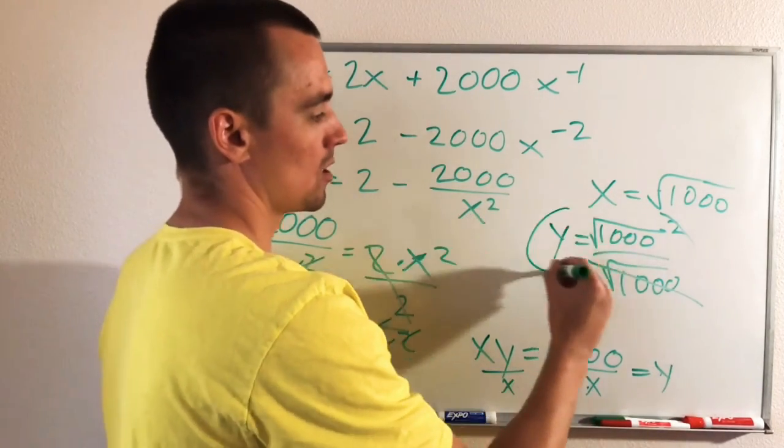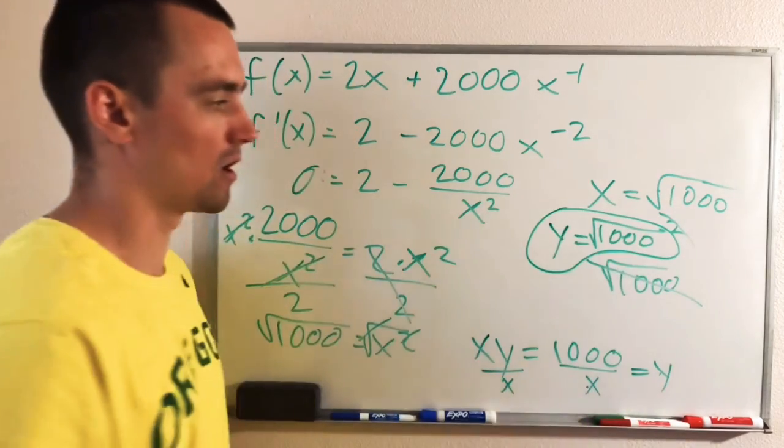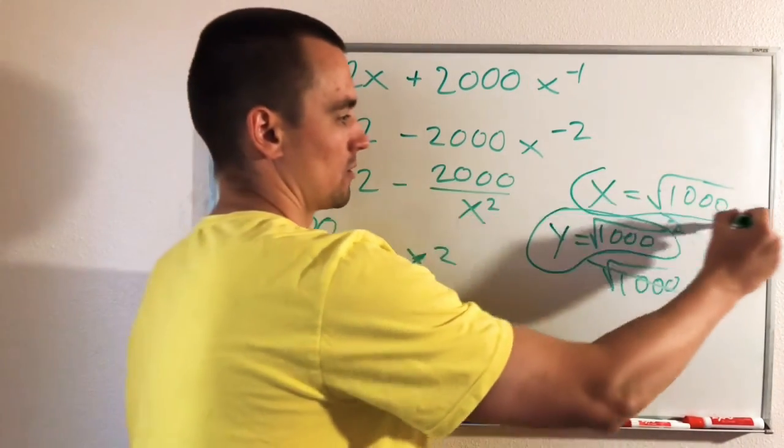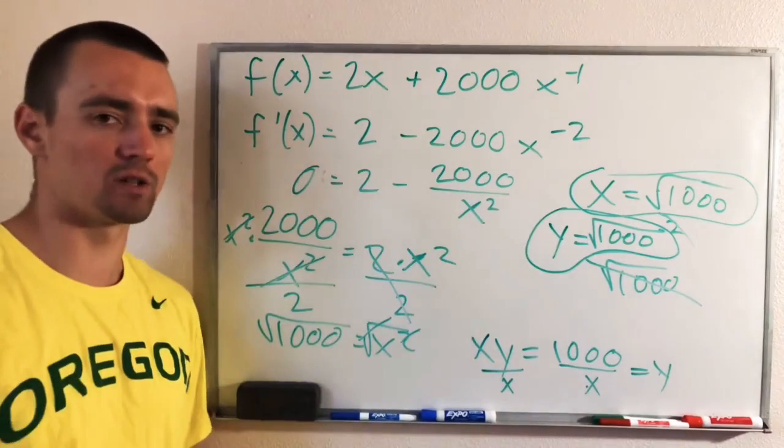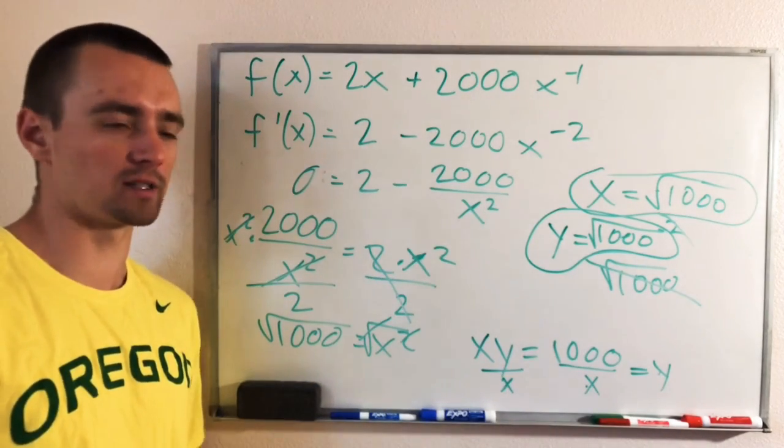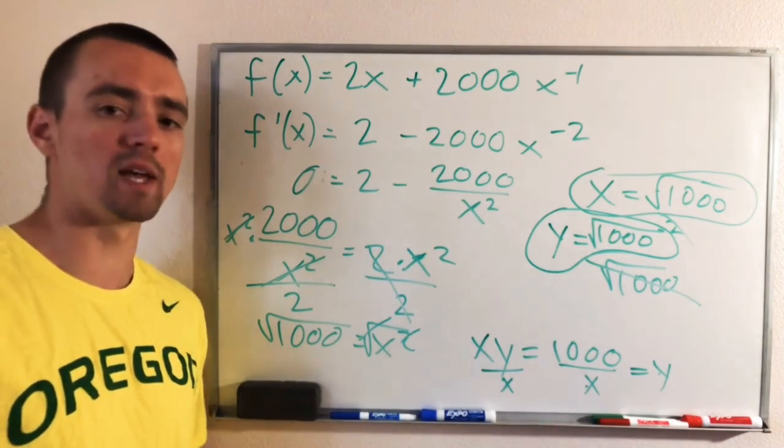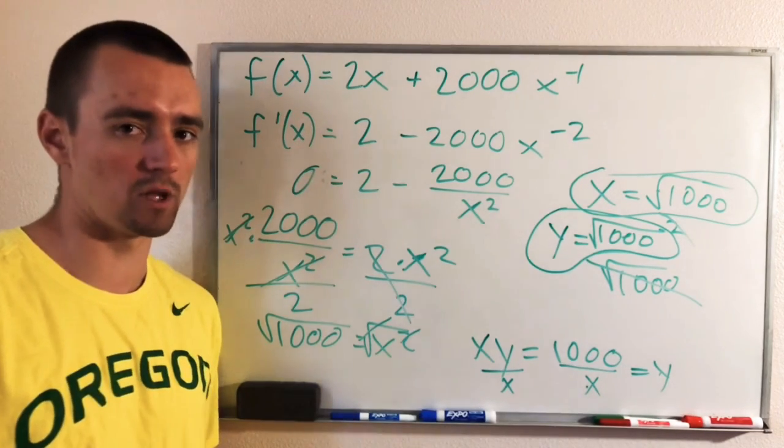So that just leaves us with Y equals the square root of 1,000 and X equals the square root of 1,000 are the dimensions that make the perimeter of this rectangle as small as possible while maintaining the area of 1,000 meters squared.